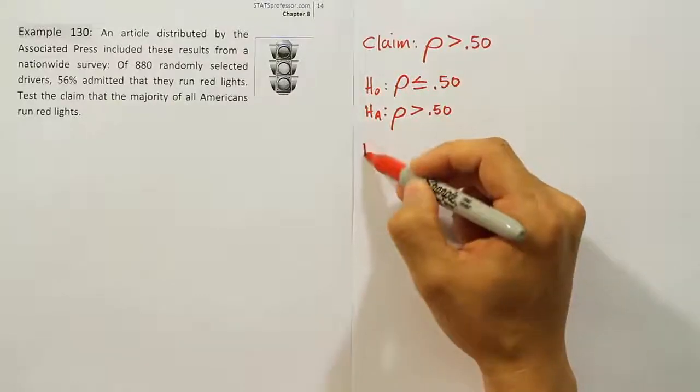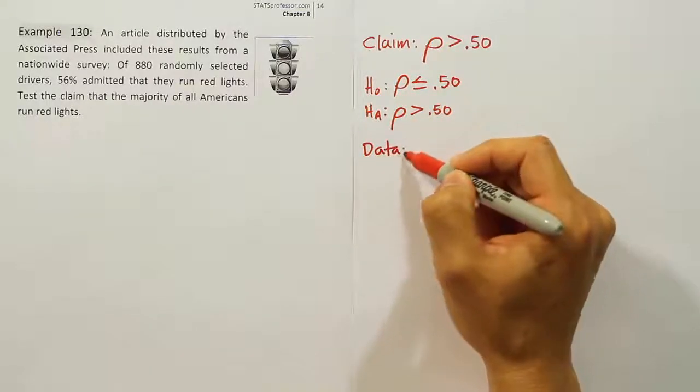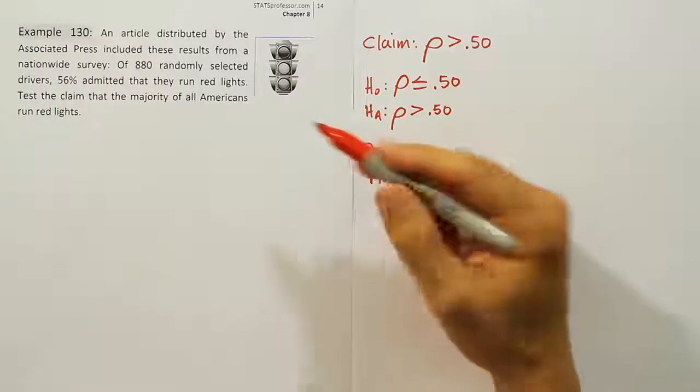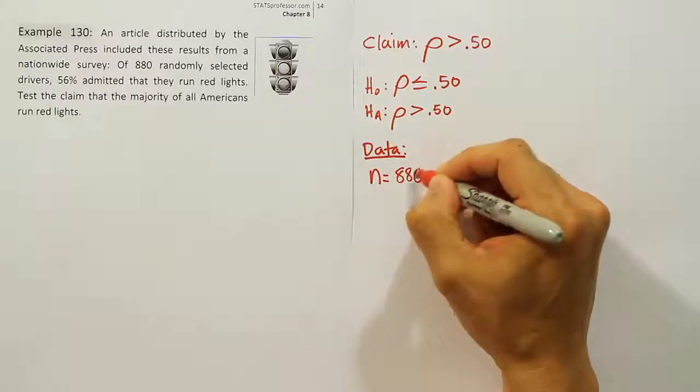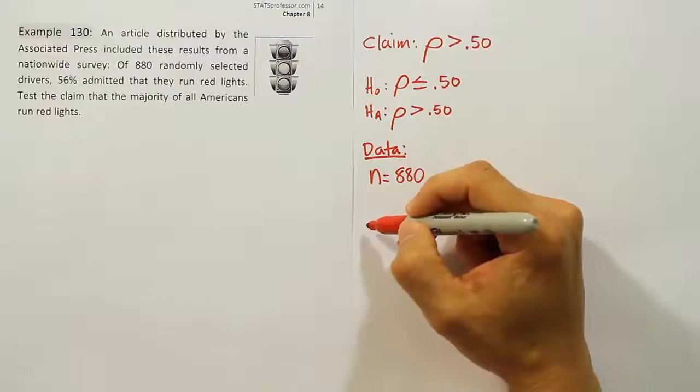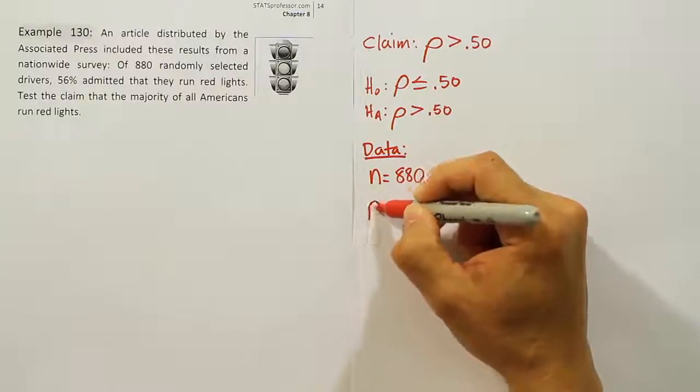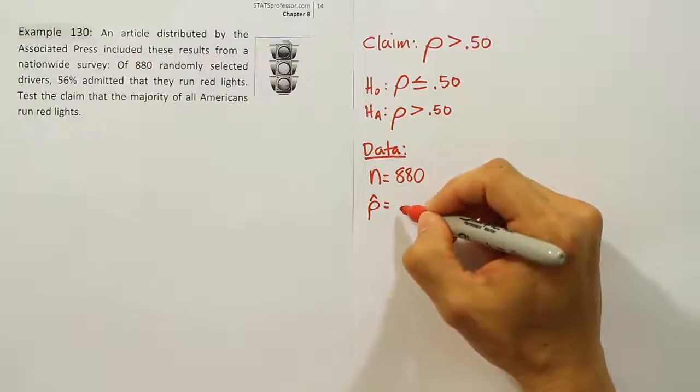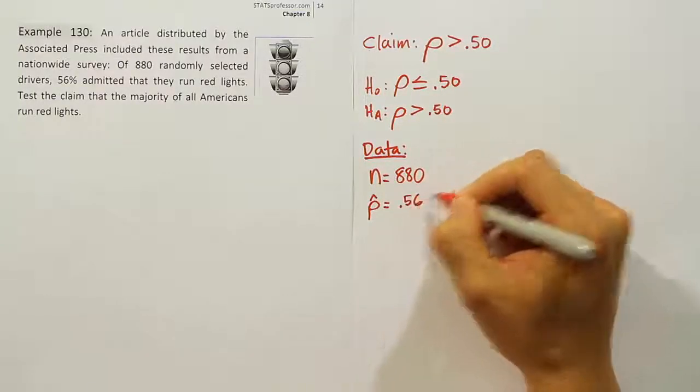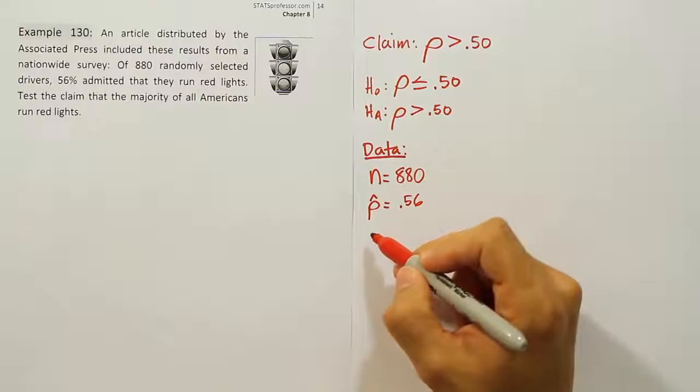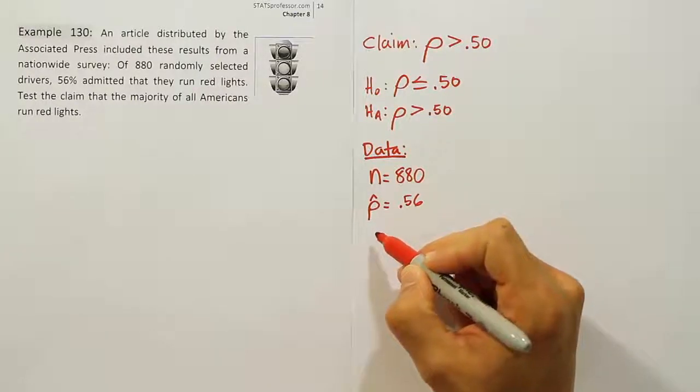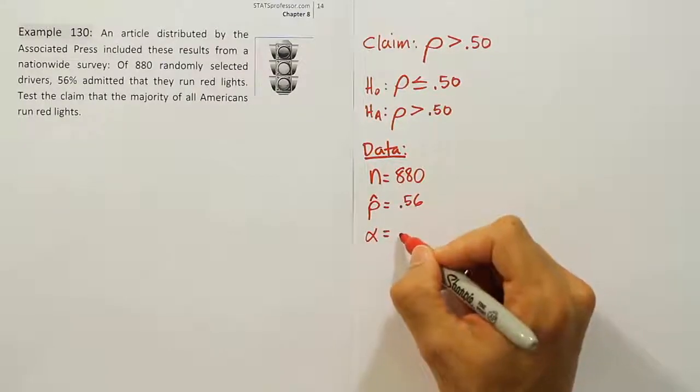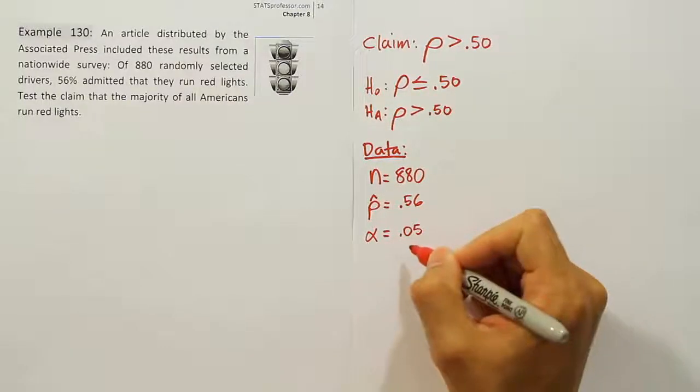From here we write down the data from the problem. All we need is a sample size, which is n = 880. We need the sample proportion p-hat, which is 0.56. And lastly we need a significance level alpha. The problem doesn't give a significance level, so we'll assume it's 0.05, which is the default case.